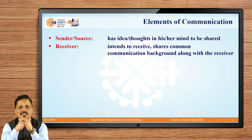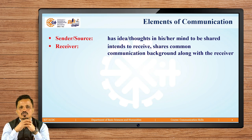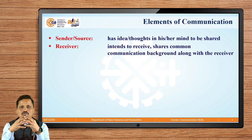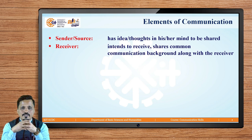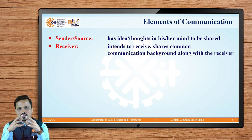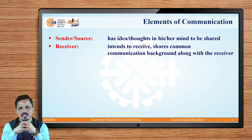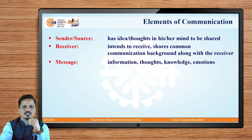The receiver is the second important element in the communication cycle. Like the sender, the receiver intends to receive the information. The receiver shares a common communication background with the sender — they must be from the same communication background. For example, if the sender is speaking in Japanese and the receiver does not understand Japanese, communication will not take place.